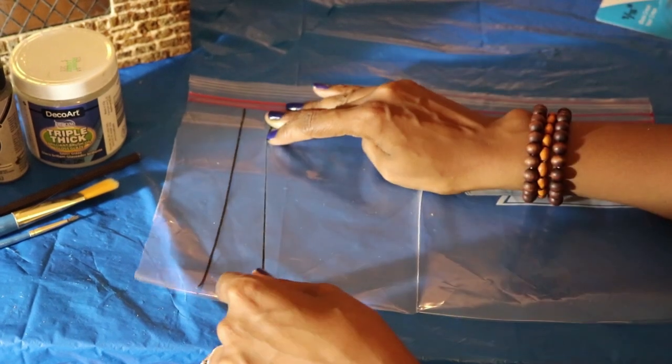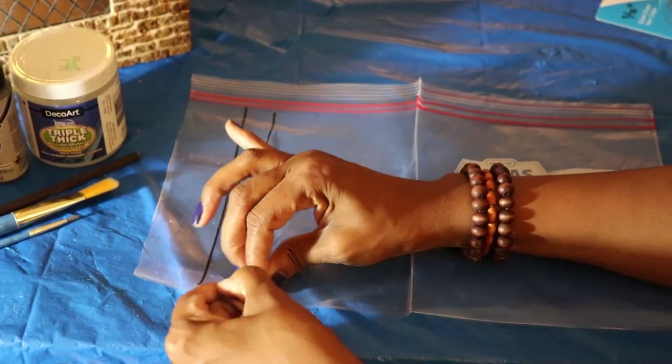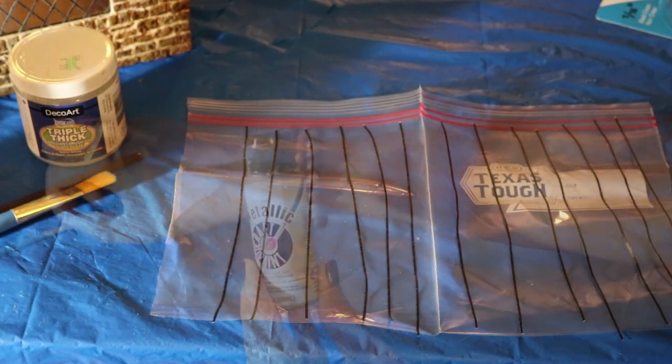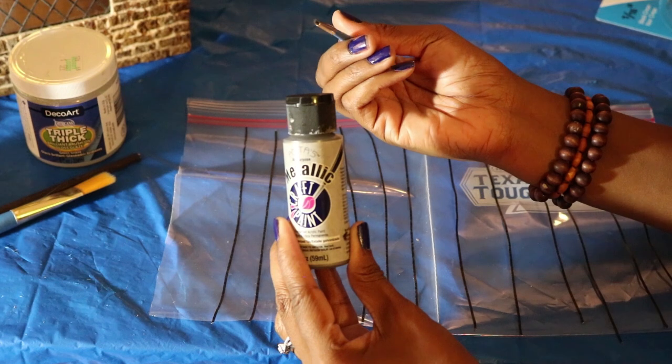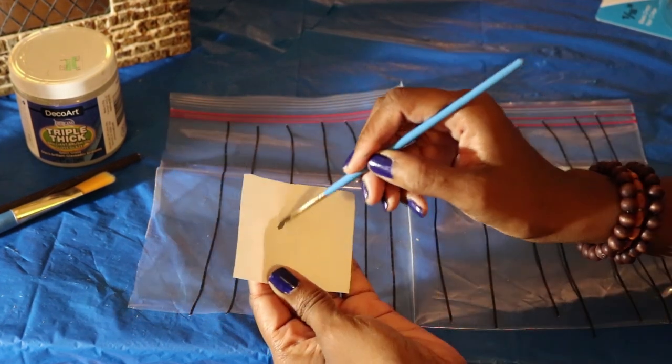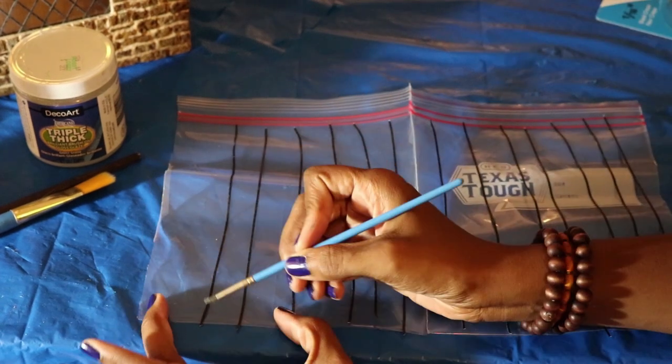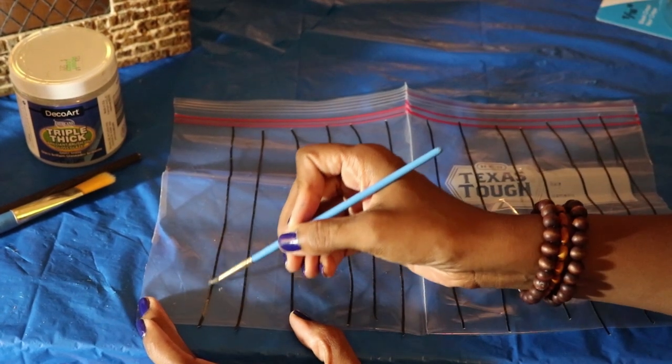As you can see, it tears easily and it's self-adhesive. So once they're all laid out, I can start painting them. I'm going for a more weathered look, so I'm dry brushing the paint on. This way, a lot of the black shows through the silver.